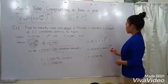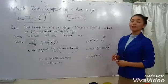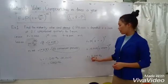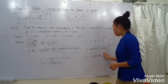times 1 plus 0.005 to the power of 20, having the result of the maturity value of 11,048.